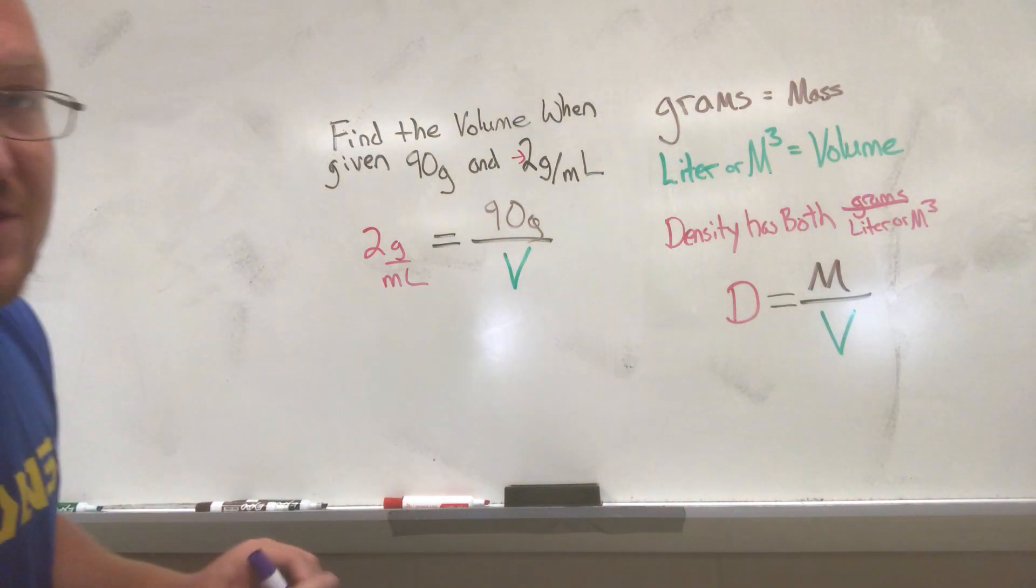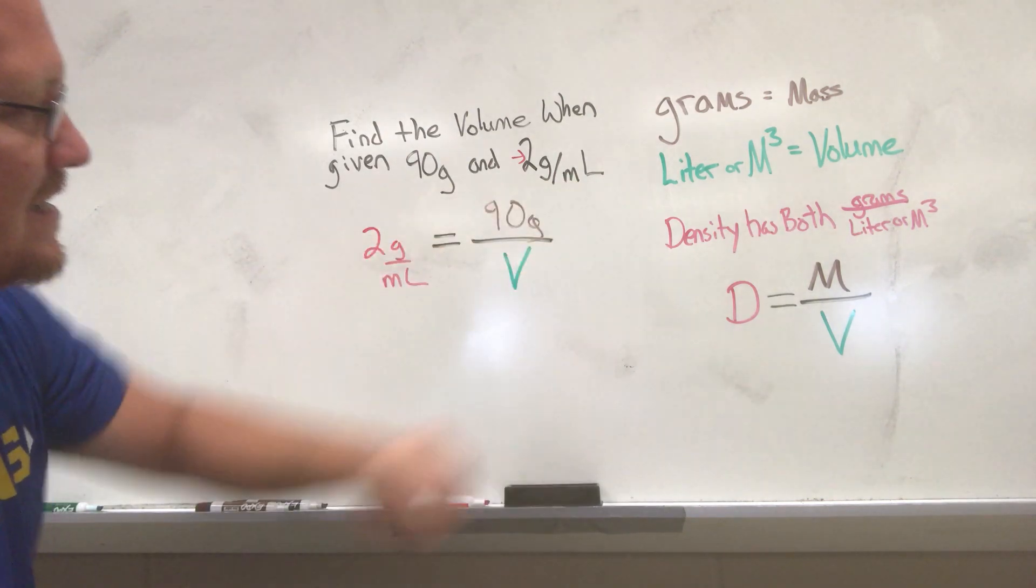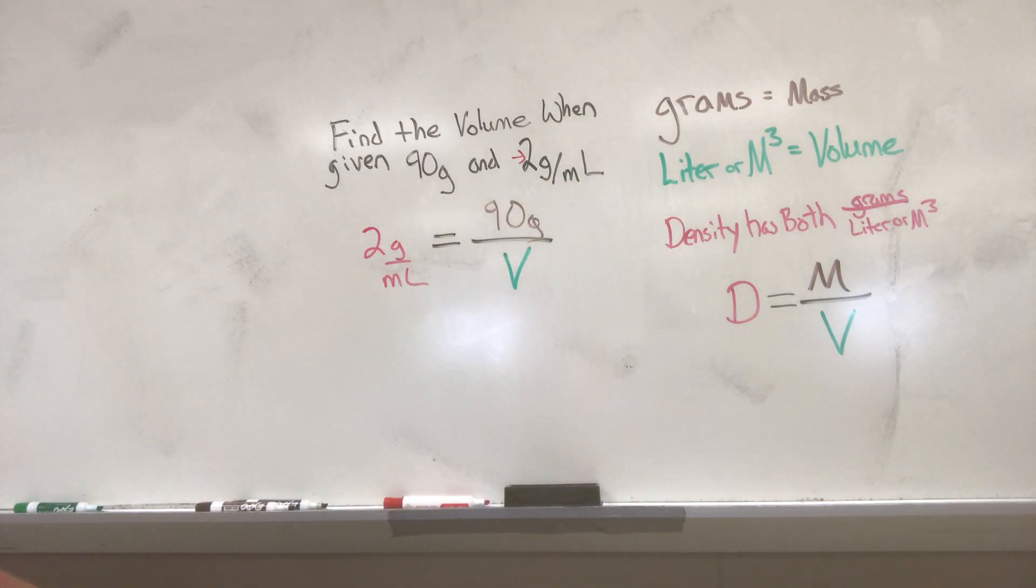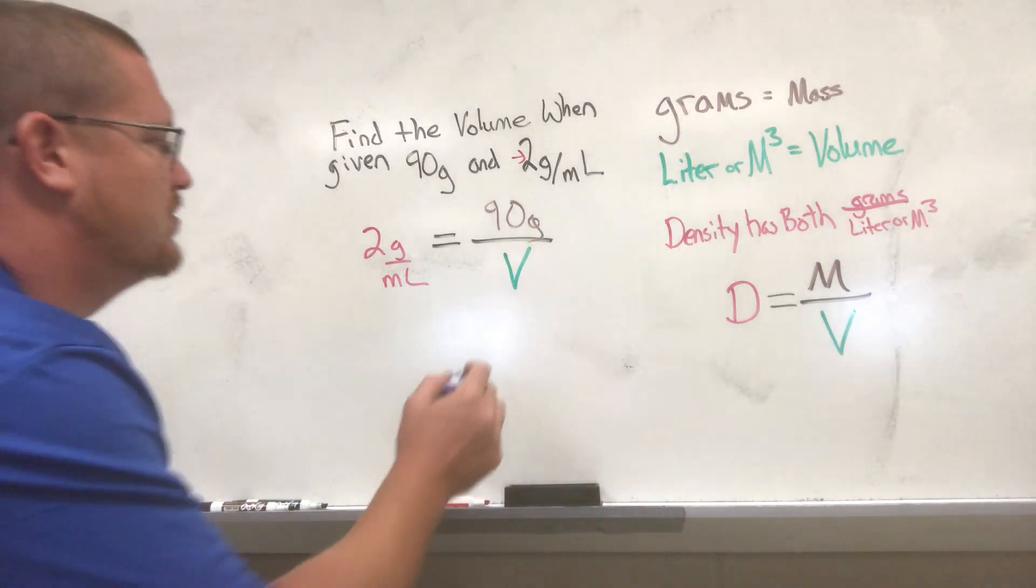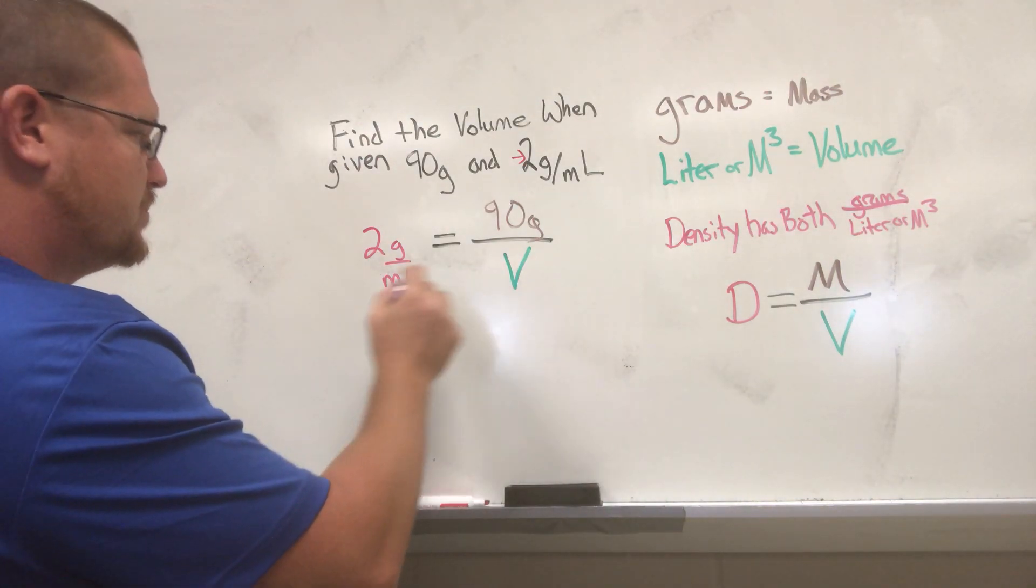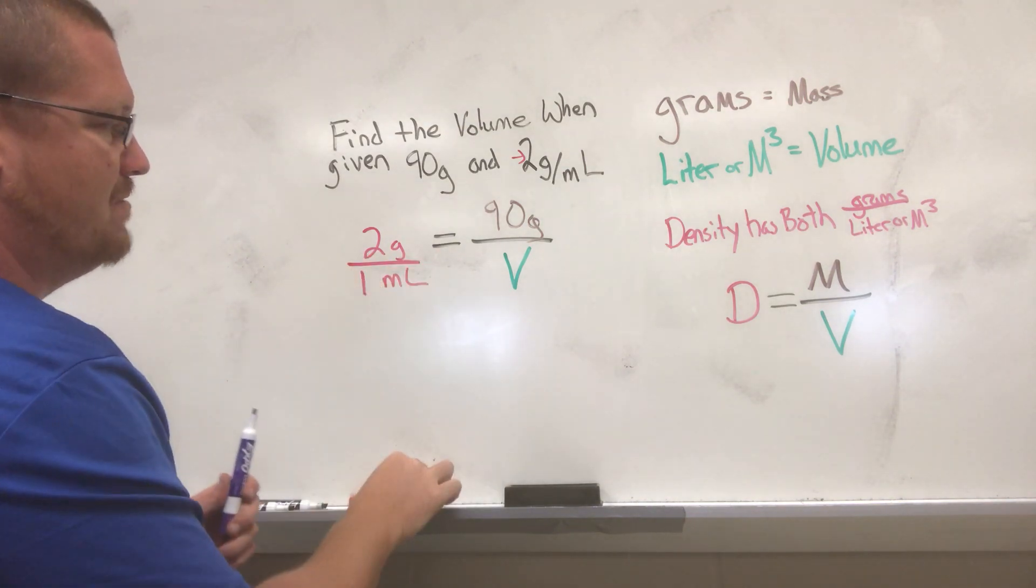The easiest thing to do in this situation is to cross multiply. You cannot move the 90 away from this, that would leave behind an improper fraction, just can't do it. So we're gonna cross multiply. This over here is essentially 1 milliliter on bottom.